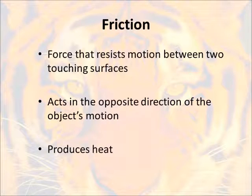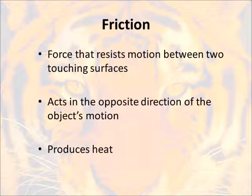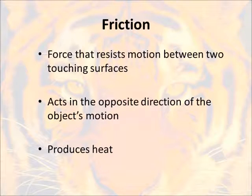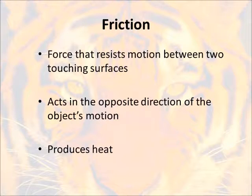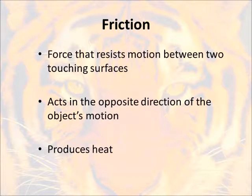Friction acts in the opposite direction of the object's motion. So if your skateboard is going to the right, friction is fighting it, pushing to the left and slowing you down. Friction does produce a little bit of heat, and this is where some of that energy goes. Even your skateboard wheels — even if the bearings are really good — there's still friction, and it's going to produce a little bit of heat and steal some of that energy from you.